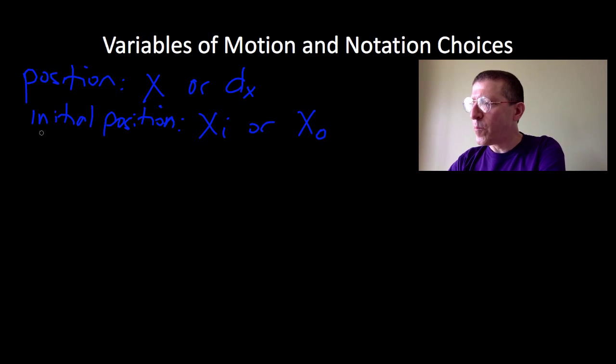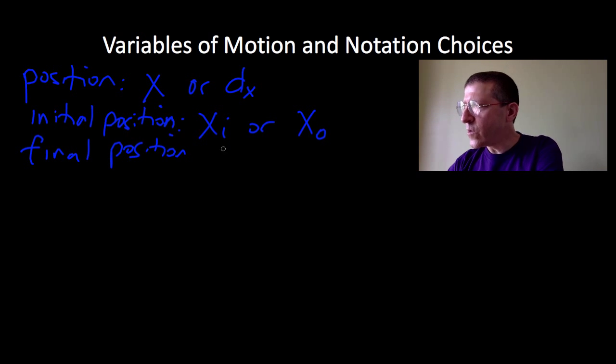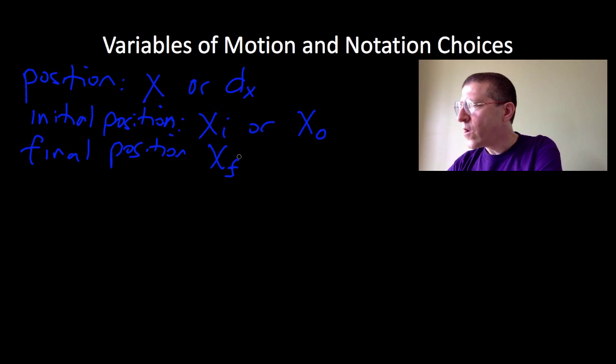Also, we can have final position. You could express final position a couple different ways. One is X final, if you like those letters indicating it, or as the AP Physics exam equation sheet does, they just call it X. So if you just see X, that means X final.